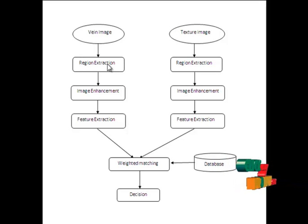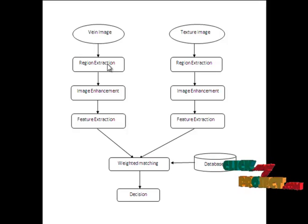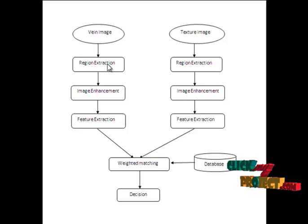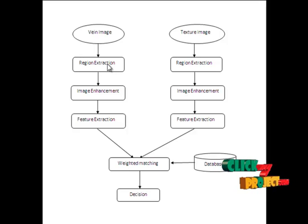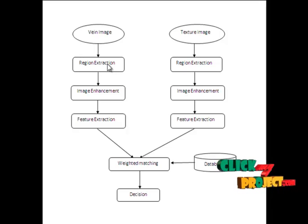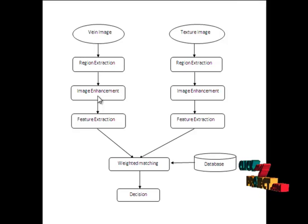The adaptive threshold segmentation segments the image based on a threshold value. First we select a gray-level threshold between the two dominant levels to distinguish the two classes. After selecting the threshold, the region is extracted, and then it proceeds to the image enhancement process.